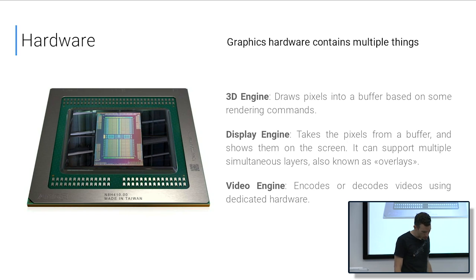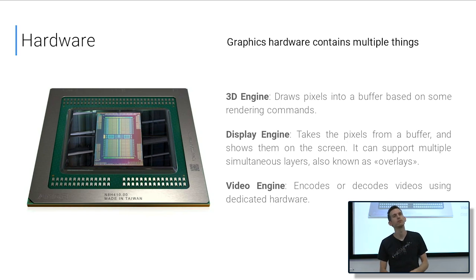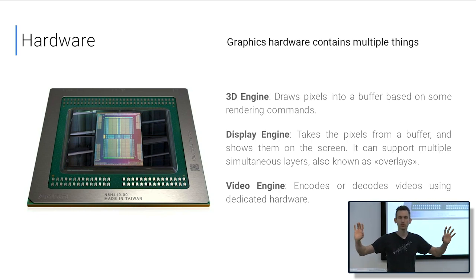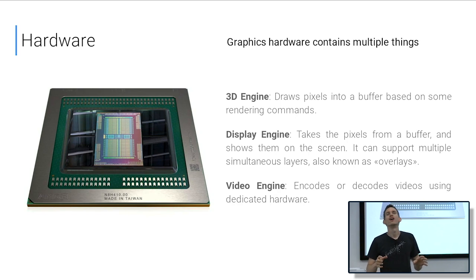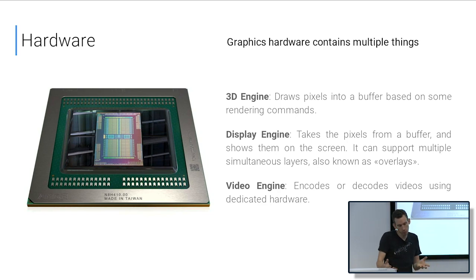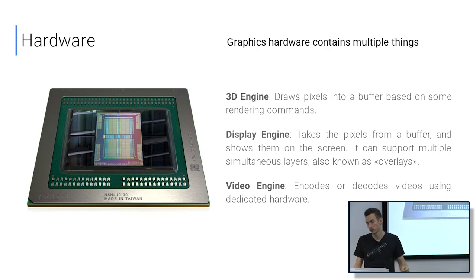Then we have the display engine, which takes buffers of pixels and sends them on the wire to get displayed on the screen. So you have two engines that work together: one to produce images, and one to show them on the screen. The last engine — the video engine, which we won't cover today — is similar to the 3D engine in that it produces buffers, but based on an encoded video stream like VP8, VP9, or H.264. There's a piece of hardware that decodes a YouTube stream into a picture, which then goes to the display engine.